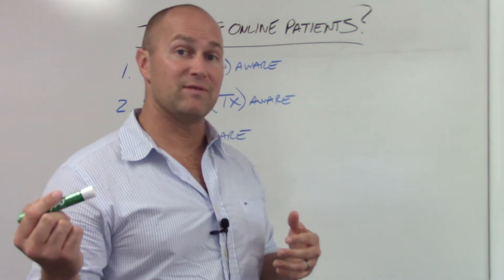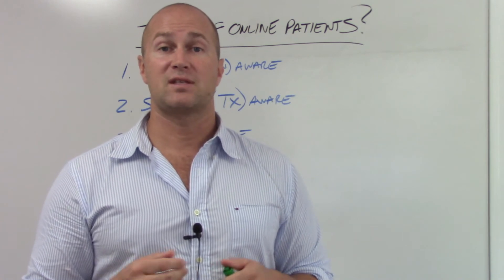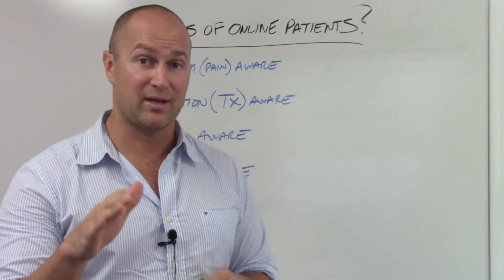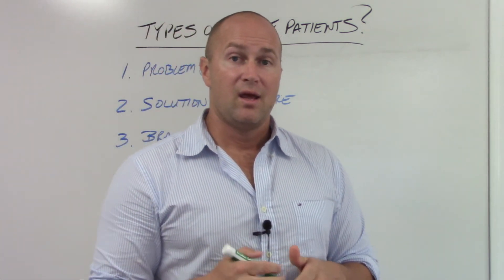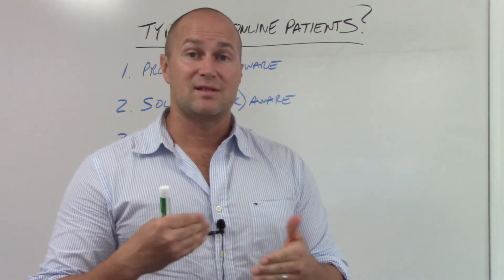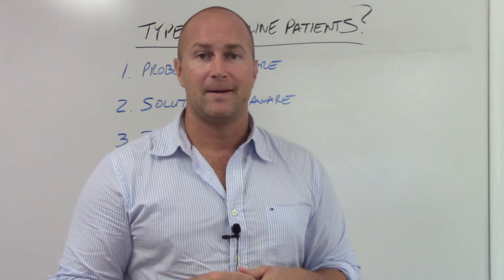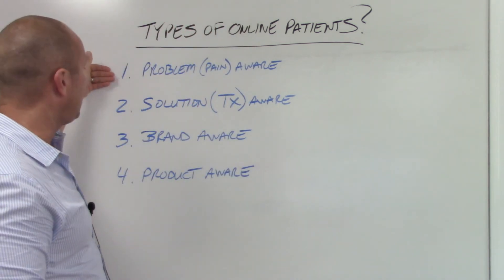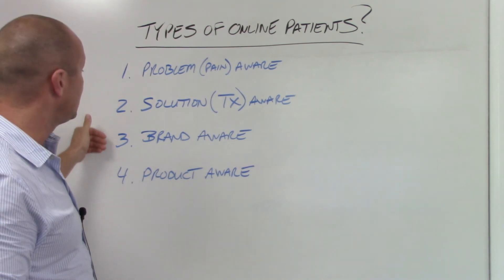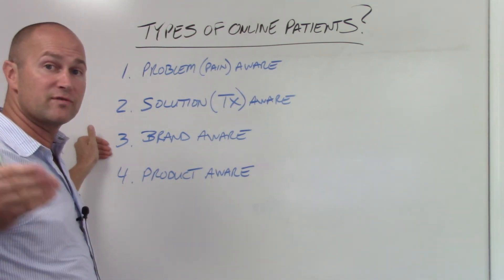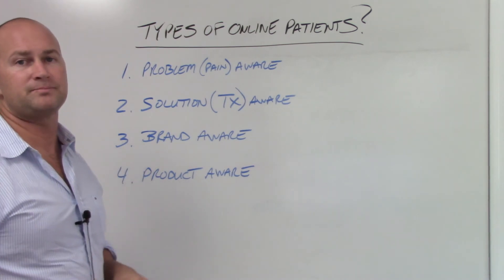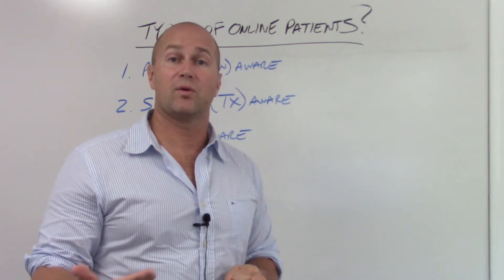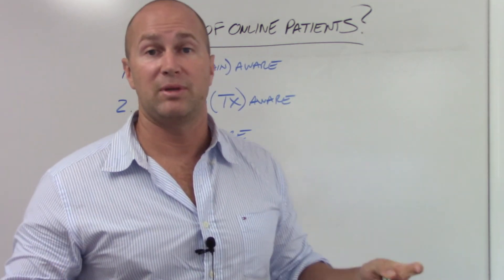That's why the first three phases are better for a cash-based clinic — these are the people you really have to target. Going over the four phases: you have problem aware — people in pain; solution aware — people looking for treatment; brand aware — people searching for you and your company; and product aware — people searching for physical therapy. I hope this helps you understand what type of people are searching online when you're designing an online marketing strategy.